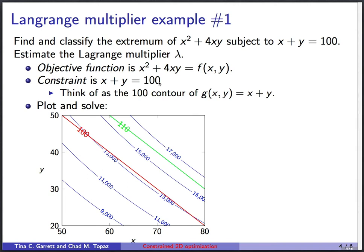And the way I would like you to think of this is that there is another function, g(x, y), which is equal to x + y. And then I am forcing you to be on the contour of this function that has the value 100. And so the way we're going to solve this is just by plotting it.